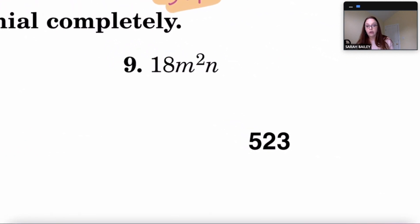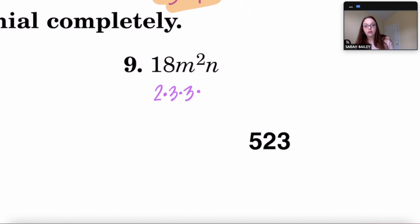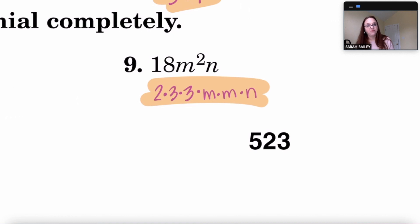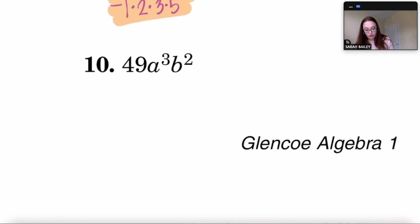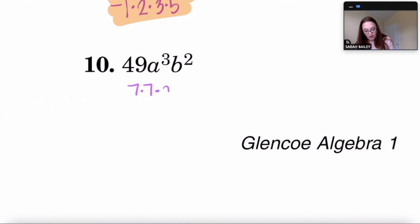For 18m²: 18 is 2 times 9, and 9 is 3 times 3, then m² is m times m. For 49a³b²: 49 is 7 times 7, a³ is a times a times a, and b² is b times b.